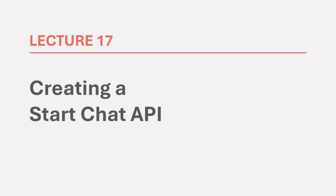In the last lecture, we created the chat schema. Now in this lecture, we are going to implement an API to start a chat between two users. But before we do that, let's first understand how we are going to create a chat.